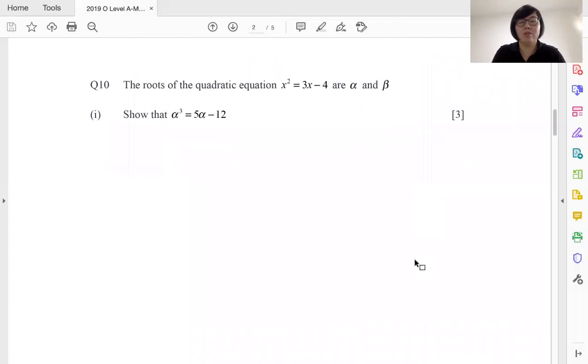This is the question. The first part is divided into four parts for this question, so let's take a look at this question. They tell us that the roots of the quadratic equations are alpha and beta, and the first part is asking you to do showing.